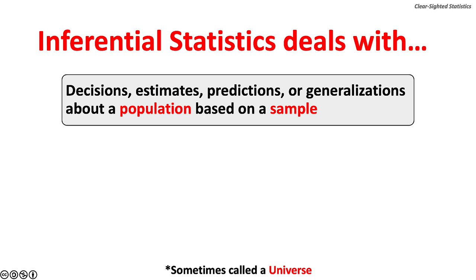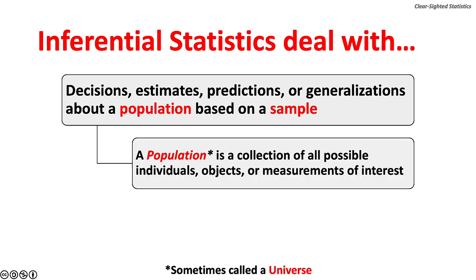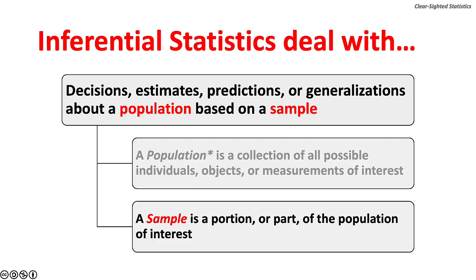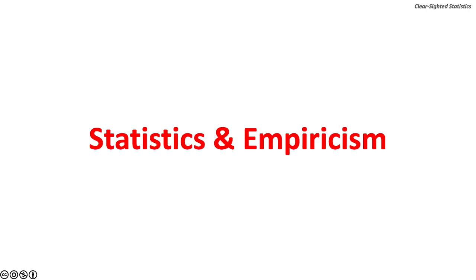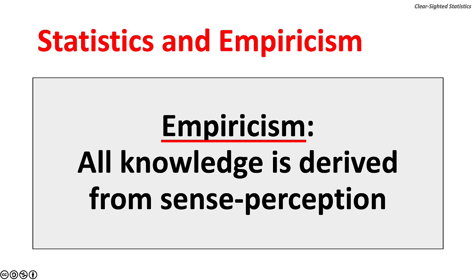Inferential statistics deals with decisions, estimates, predictions, or generalizations about a population based on a sample. A population is a collection of all possible individuals, objects, or measurements of interest; a sample is a portion or part of the population. Inferential statistics relies on probability theory, which is covered in Chapter 7 of Clearsighted Statistics. Empiricism is a theory of knowledge that holds all knowledge is derived from sense perception, rising alongside experimental science in the 17th and 18th centuries.